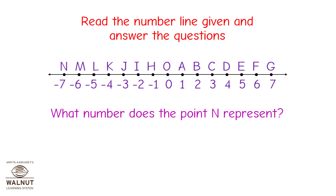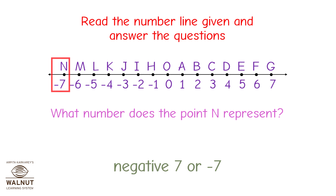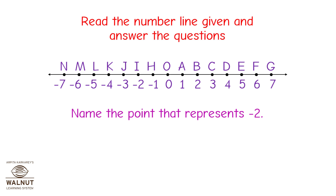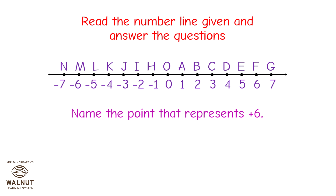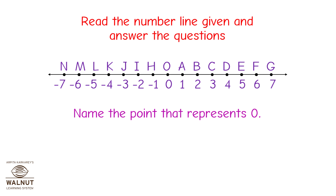What number does the point N represent? Look at the number N on the number line. It is exactly above the number minus 7. So point N represents negative 7. Name the point that represents minus 2. Look at the point minus 2 on the number line. It is exactly below the point I. So the number minus 2 represents the point I. Name the point that represents plus 6. Look at the point plus 6 on the number line. It is exactly below the point F. So the number 6 represents the point F. Name the point that represents 0. Look at the 0 on the number line. It is exactly below the point O. So the number 0 represents the point O.